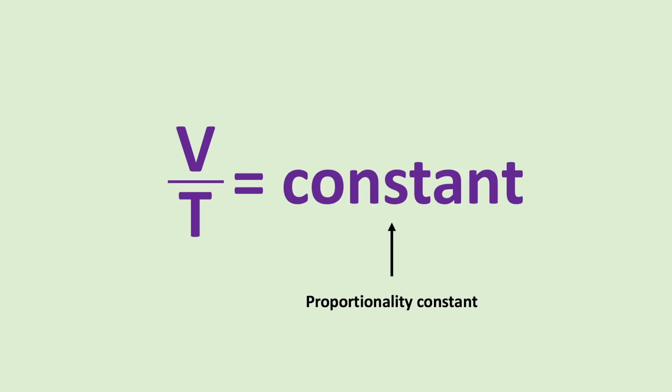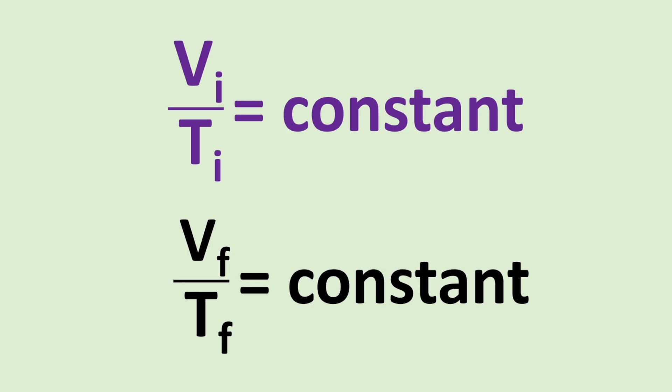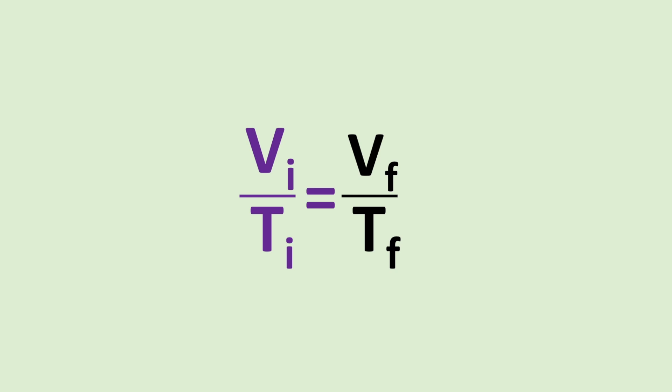Charles and Gay-Lussac's law can be described by the following equation, where volume divided by temperature is equal to a proportionality constant. Because this is equal to a constant, we can look at the change of volume or temperature by setting the following equal to each other, where V_i and T_i are the initial volume and temperature and V_f and T_f are the final volume and temperature.